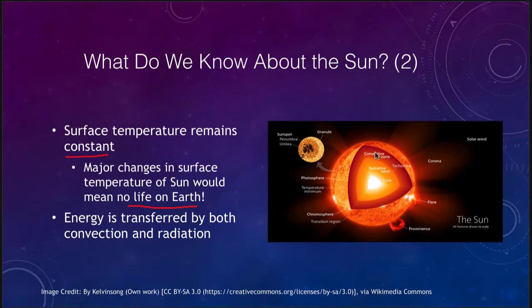We also know that the Sun transfers energy by convection in the convective zone, and by radiation in the radiative zone. There are two different ways it transfers energy, but the only production of energy is in the core — that is the only place nuclear reactions are going on. The rest of the Sun is essentially a transport mechanism to move the energy produced in the core out to the exterior of the Sun where it can escape out into space.